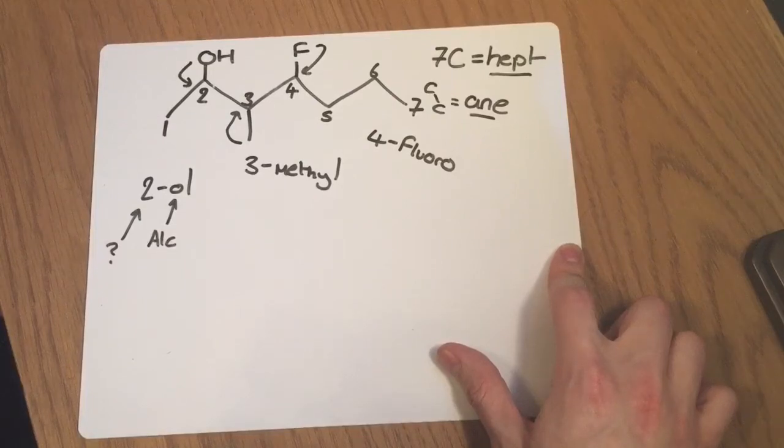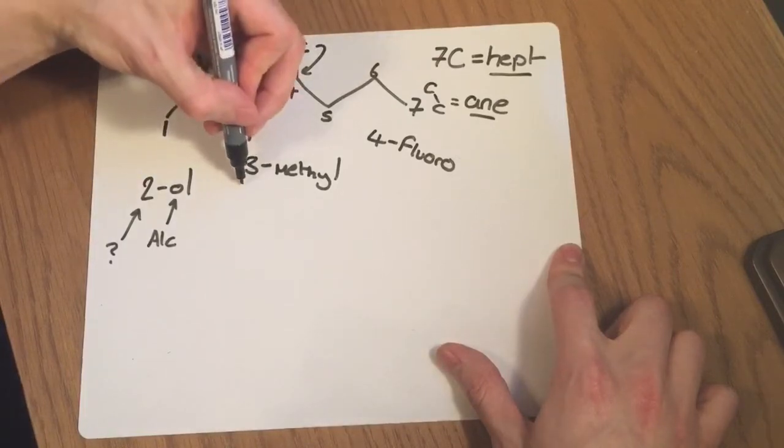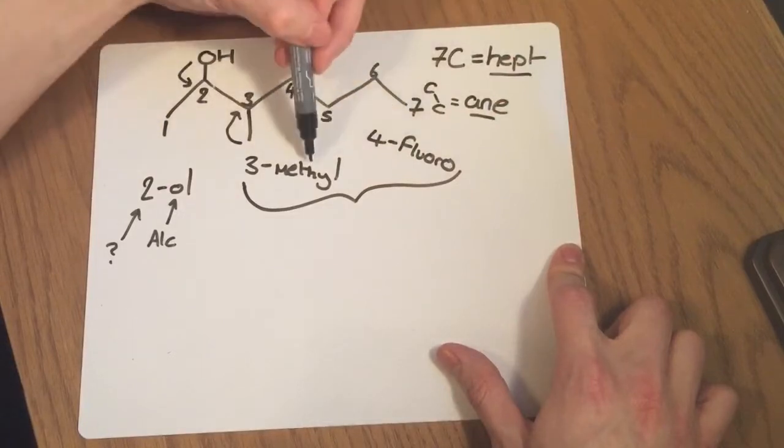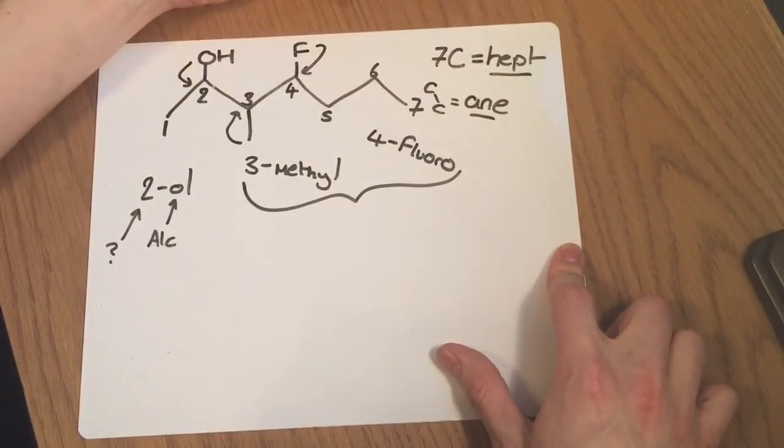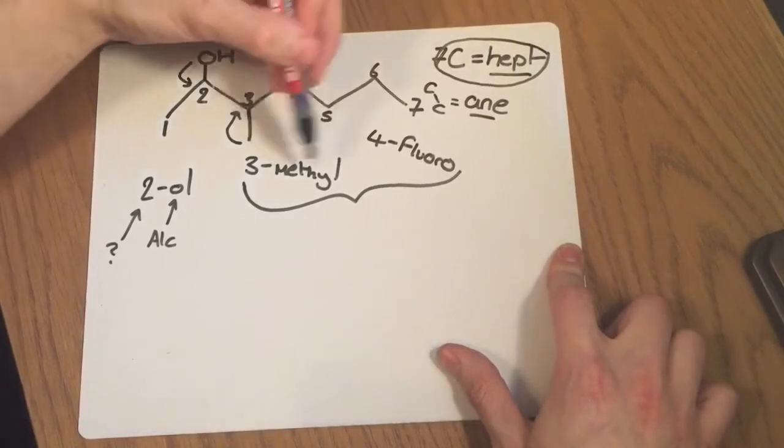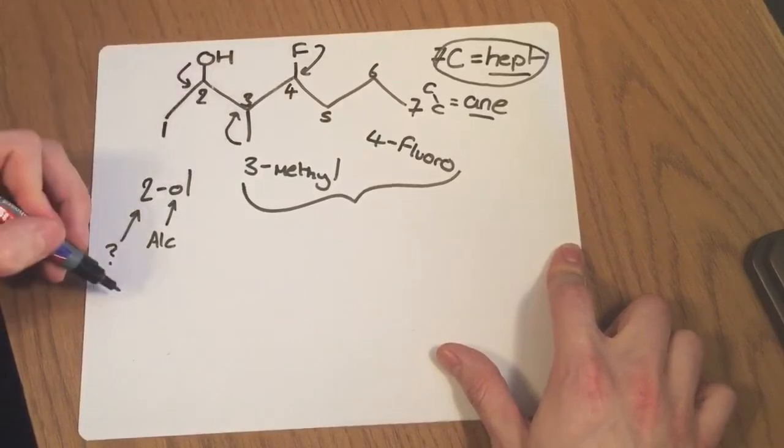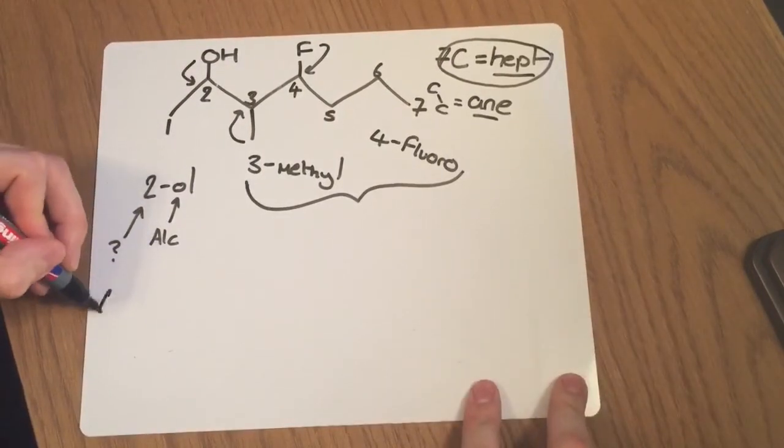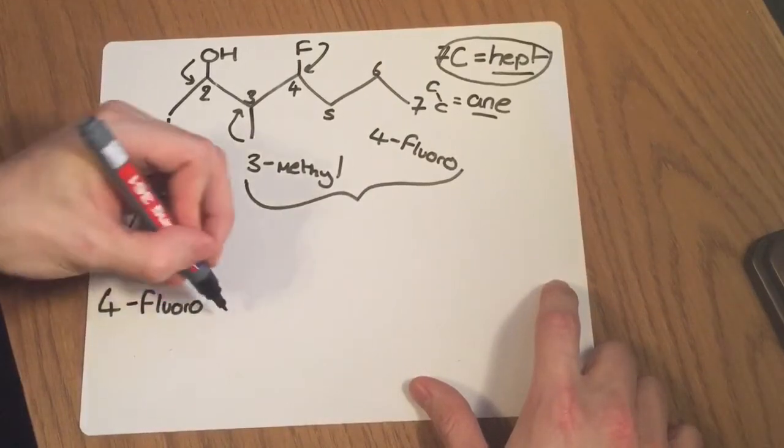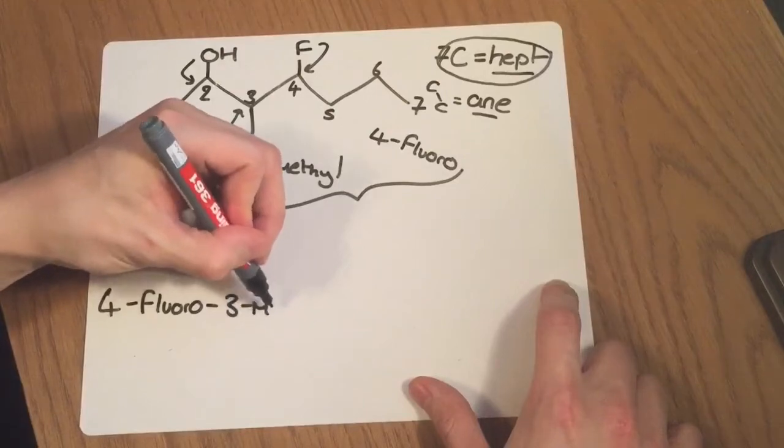Then I need to assemble everything together and we assemble it in alphabetical order. Now this alphabetical order only applies at first to these two groups because these two are my prefixes. These always come before the root part of the name and the root is this bit here. The bit I did first where everything starts from. So these are going to come before it so I'm going to list them alphabetically. So my name at the bottom down here is going to be 4-fluoro-3-methyl.